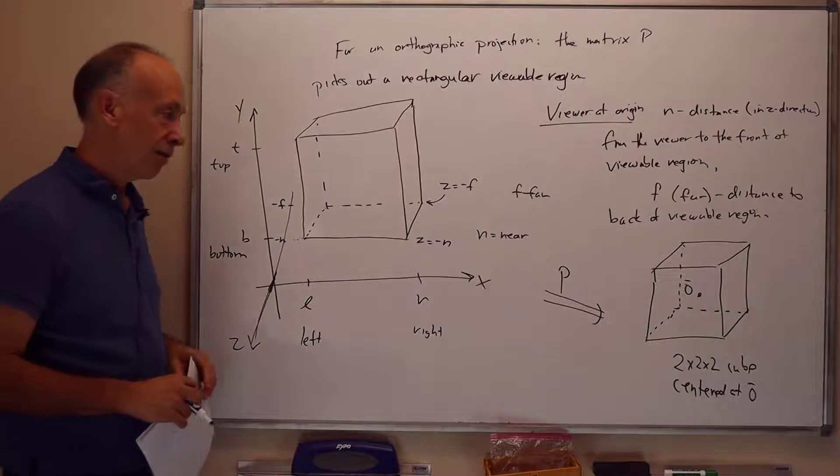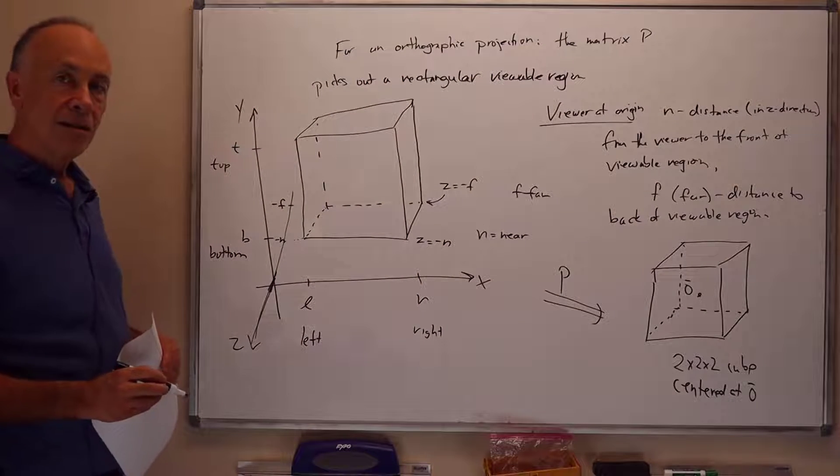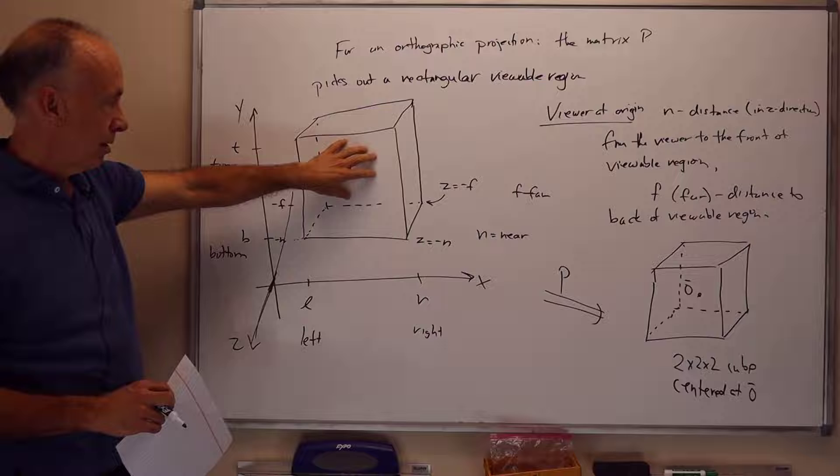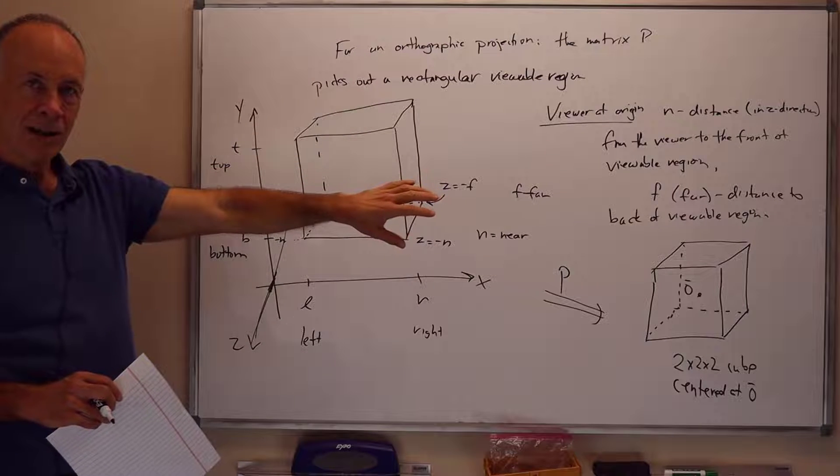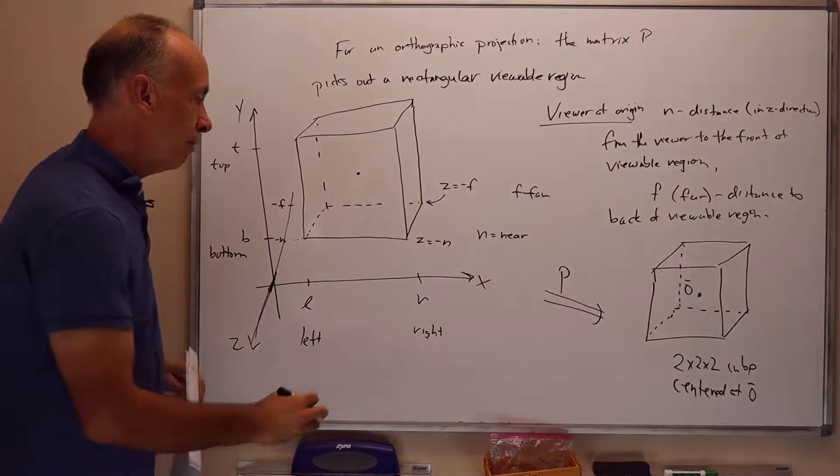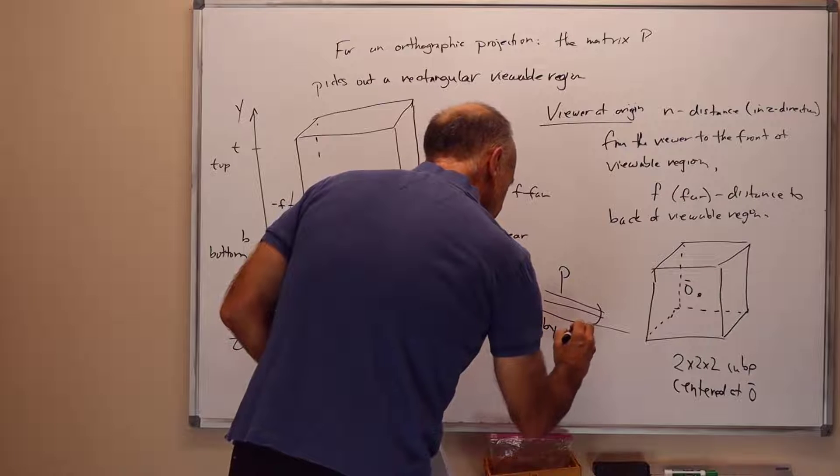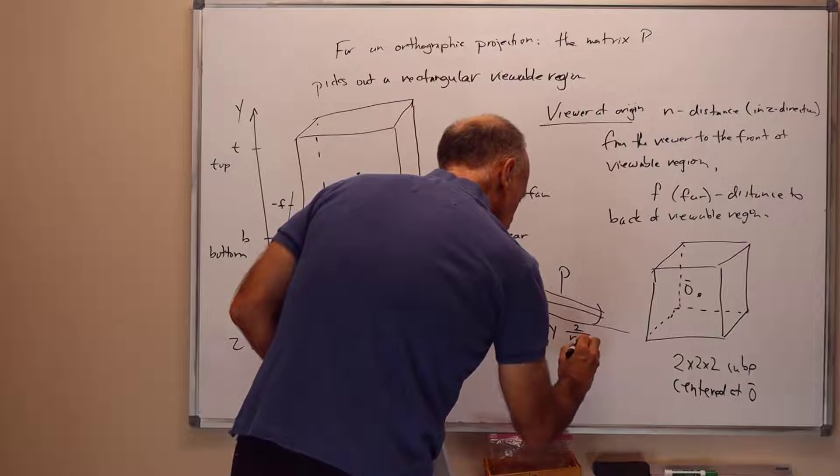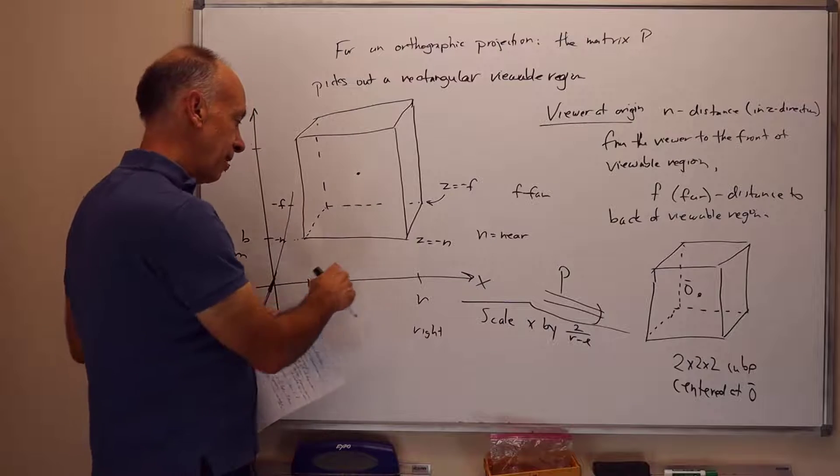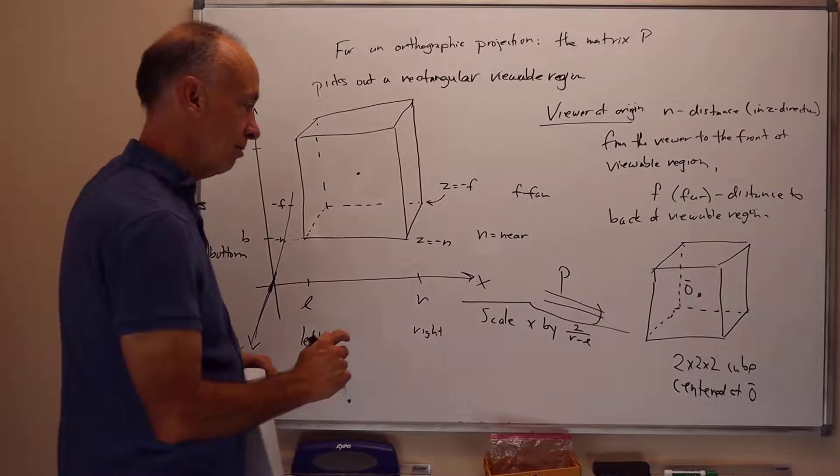But the minus 1 is going to be the more close front. So the minus 1 corresponds to close objects, and plus 1 on z corresponds to far away objects. This is a very simple affine map to transform a cube of this type to a cube there. It's not a linear map because this center of the cube is not the origin, so we have to do a translation as well. But when we do this, what P is going to do is we're going to scale x by the factor 2 over r minus l.